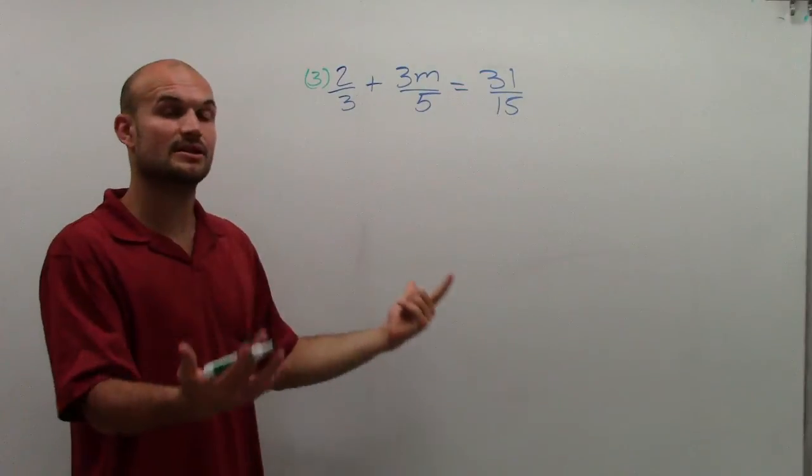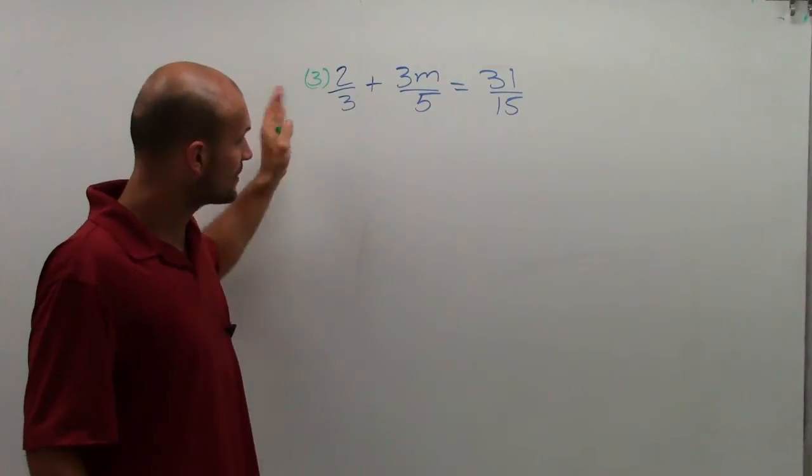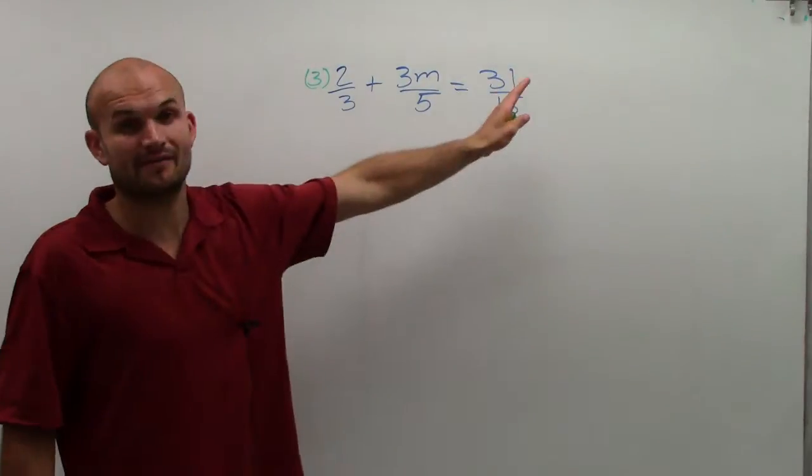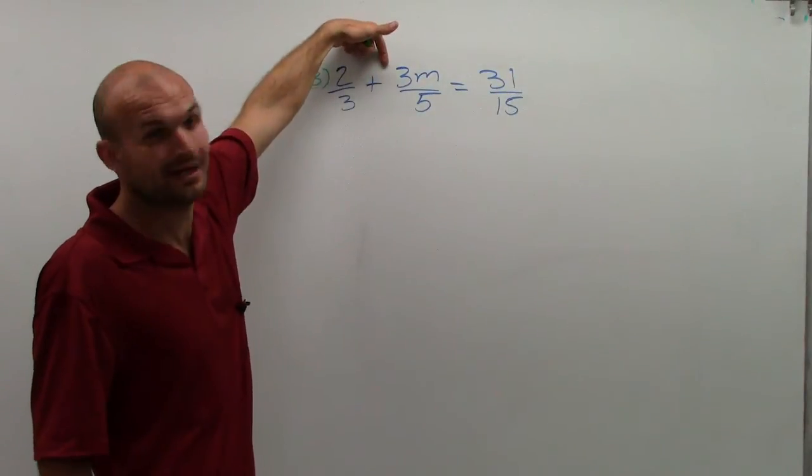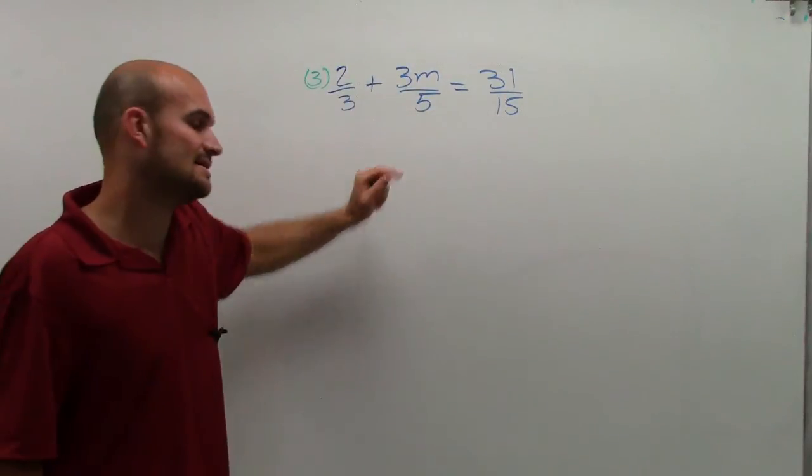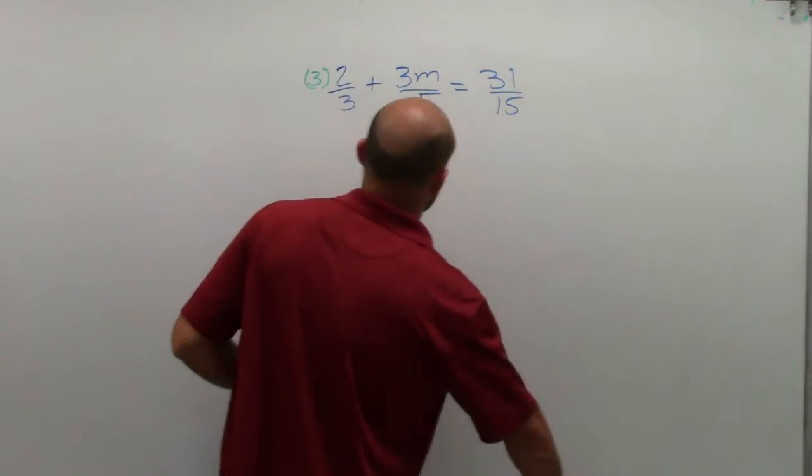However, since this is an equation, if I multiply a fraction by one number, I have to multiply everything. So if I multiply this by 3, that's not going to get rid of my fraction. I'm still going to have a 5 in the denominator. So multiplying by 3 is not going to work.